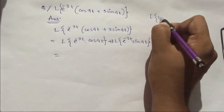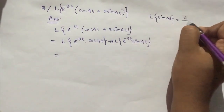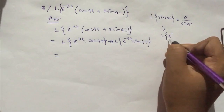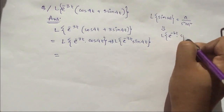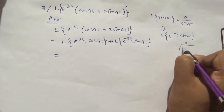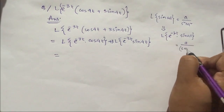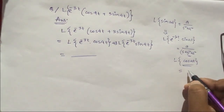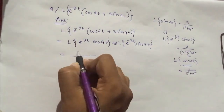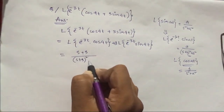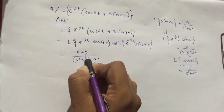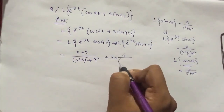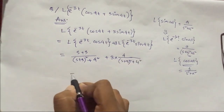If we take the Laplace transform of sin(at), we get a/(s²+a²). Now if we multiply this term by e^(bt), then b gets added with s, giving us a/((s+b)²+a²). Similarly, we get the formula for Laplace transform of cos(at)·e^(bt) as (s+b)/((s+b)²+a²). So this will be (s+3)/((s+3)²+16) plus 3 times 4/((s+3)²+16), where the 3 comes due to the exponential term.